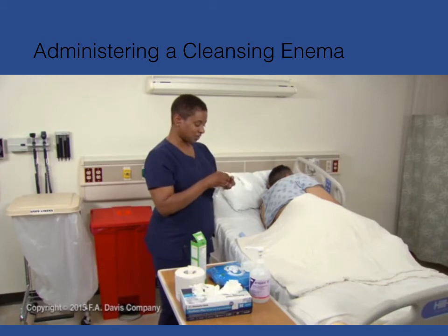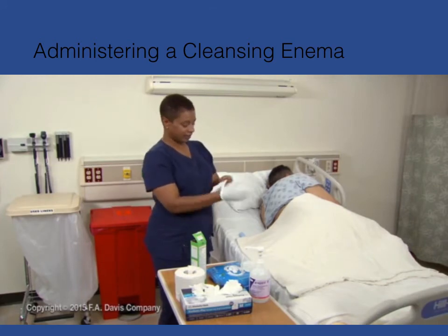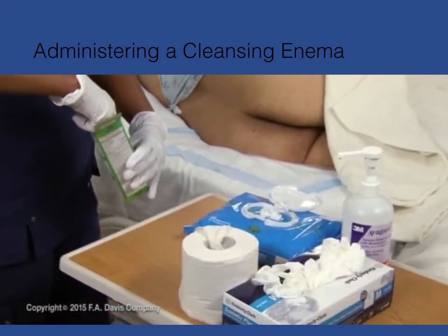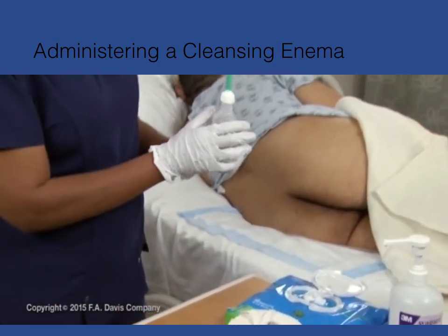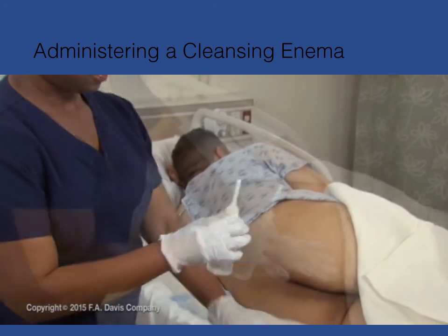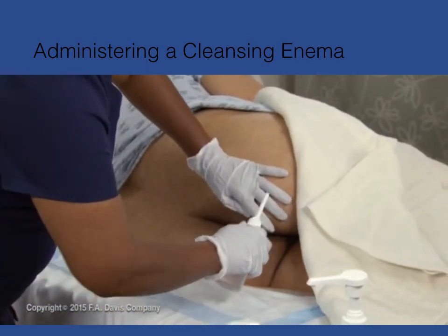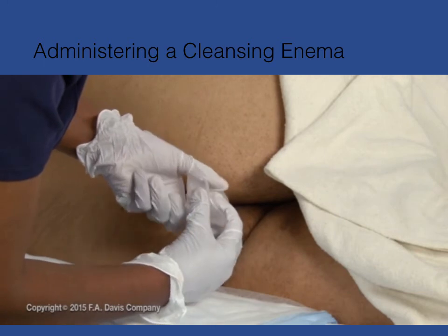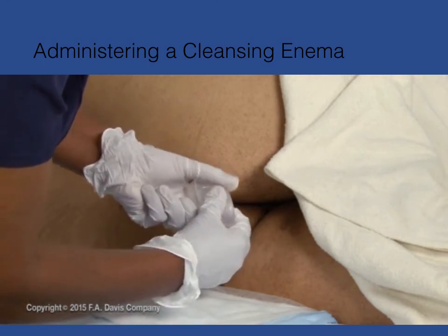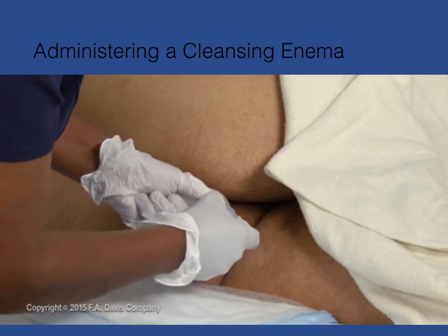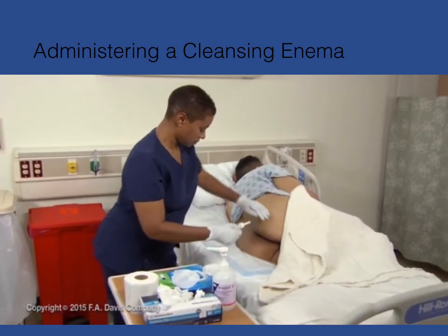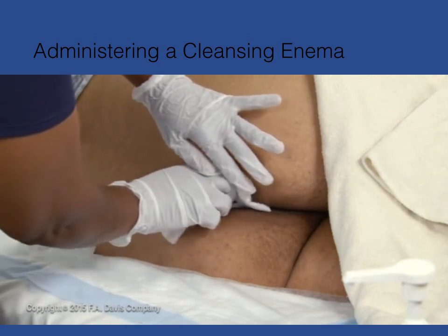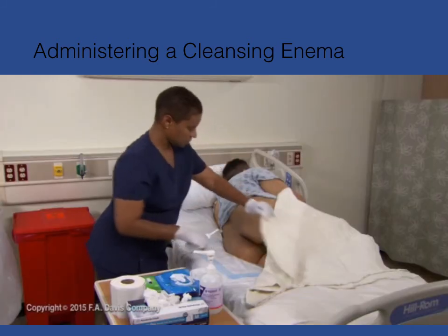For a pre-packaged enema, perform the same steps as for a cleansing enema — gloving, positioning, and so on — with the following differences. Open the package and remove the cap from the container. Clip the tip of the container if it does not have a hole in it. You may also need to add extra lubricant, even though the tip is pre-lubricated. To instill the solution, tilt the container slightly and slowly roll and squeeze the container until all of the solution is instilled. Withdraw the container tip from the rectum. Wipe the area with a disposable wipe or toilet tissue. Dispose of the empty container.